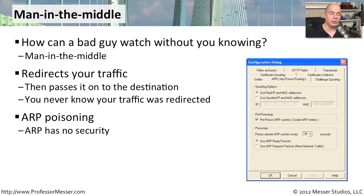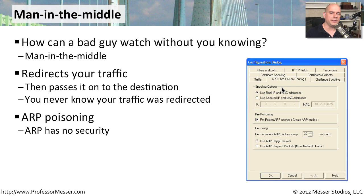There are many ways to do this across different operating systems. This happens to be a screenshot from a program in Windows called Cain and Abel, which has built right into it the ability to do ARP poison routing. Once that software gets into the middle, it simply watches all the traffic going by — pulling out email passwords, website passwords, and telling you exactly where the end user is going and what they're doing.